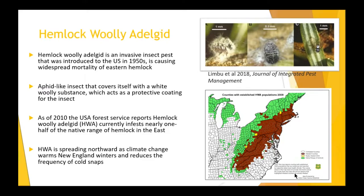As of 2010, the US Forest Service reports that the hemlock woolly adelgid currently infests nearly one-half of the native range of hemlock in the east. The graphic on the lower right displays counties with infestations as of 2010 in brown, newly infested in yellow, within the native range of hemlocks highlighted in green.